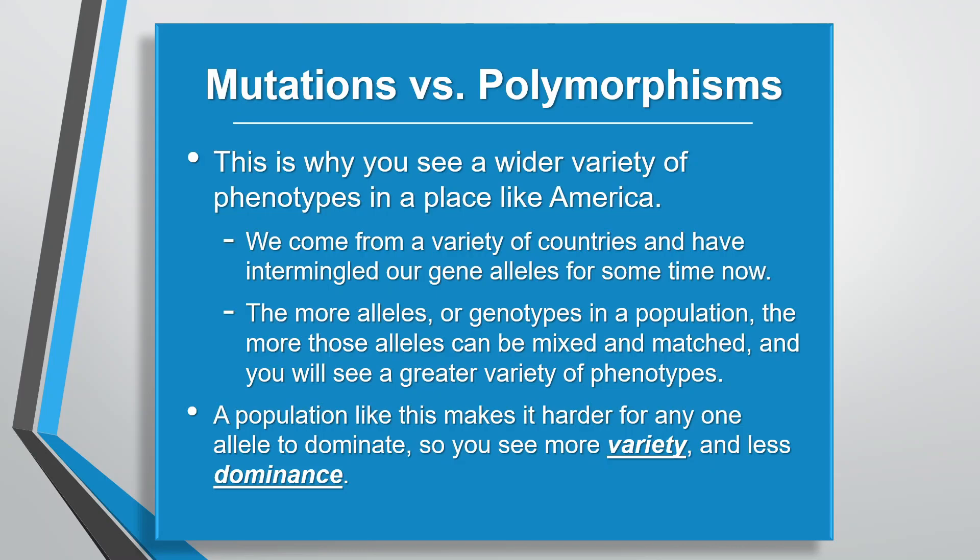This is the reason you see a wider variety of phenotypes in a place like America, where we come from a wide variety of countries and have been intermingling our gene alleles for quite some time. The more alleles and genotypes in a population, the more those alleles can be mixed and matched, and the more variety of phenotypes you'll see. A population like this makes it harder for any one allele to dominate, so you'll see more variety and less dominance.